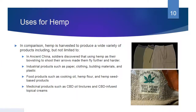Hemp is harvested to produce a wide variety of products. In ancient China, soldiers discovered that using hemp as their bowstring to shoot their arrows made them fly further and harder. Industrial products include paper, clothing, building materials, and plastic. Over on the right, there's a pair of hemp pants — Himalayan 100% hemp, THC free. Meaning you can't smoke your shorts and get high, but you can feel good about wearing organic clothing that is usually harvested in a less brutal way than other fabrics.